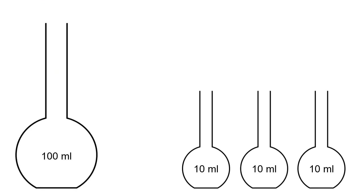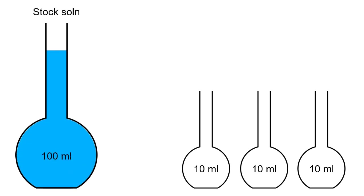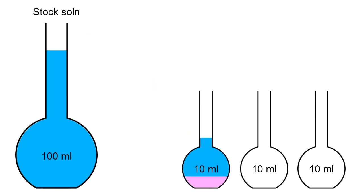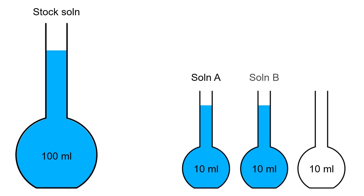So here's our simple serial dilution scenario. Let's imagine that we've weighed out a small quantity of a salt and we're going to dissolve that in an initial stock solution. Then we'll take a small aliquot of that, put it in another standard flask, dilute that up to the mark, and we'll call that solution A. Then we'll take a small aliquot of solution A, put that in another standard flask, make that up to the mark, and we'll call that solution B. Finally we'll take a small aliquot of solution B, put that in a final standard flask, make that up to the mark, and we'll call that solution C.